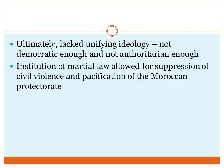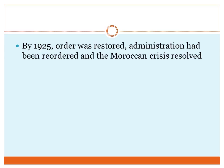He instituted martial law — cancelling all civil rights — with extreme repression to suppress civil violence and to pacify the Moroccan protectorate. By 1925, Primo de Rivera had succeeded in pacifying Morocco, which was something many people had wanted, as we've discussed previously — especially after General Silvestre had lost 60% of his troops there.